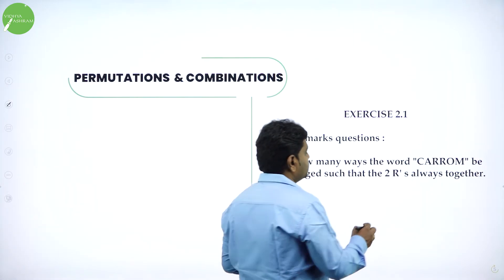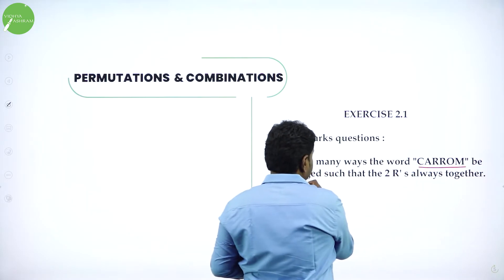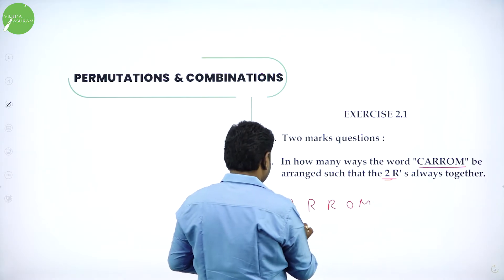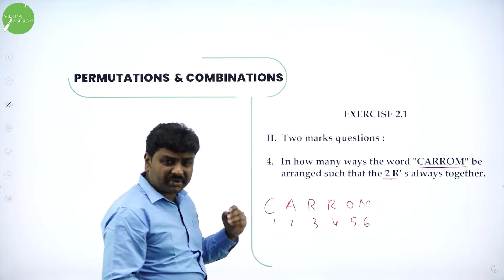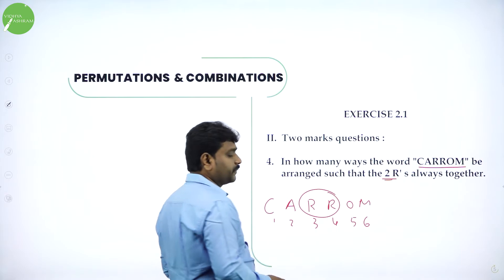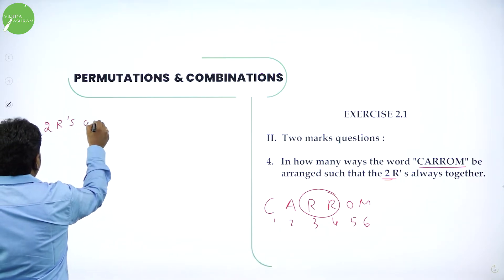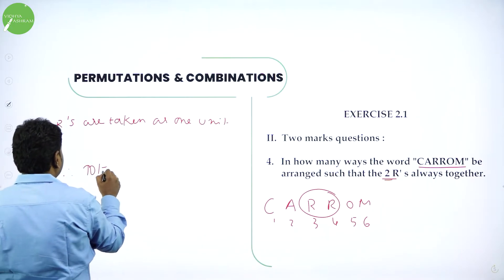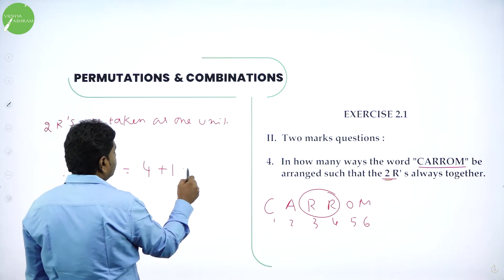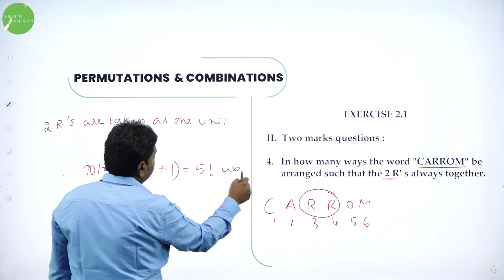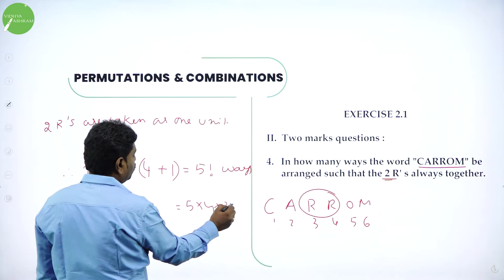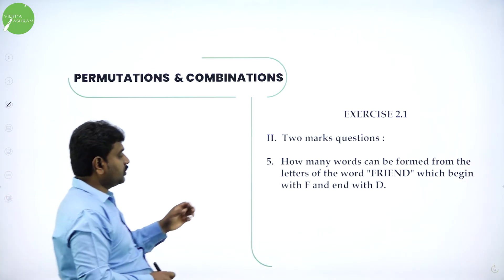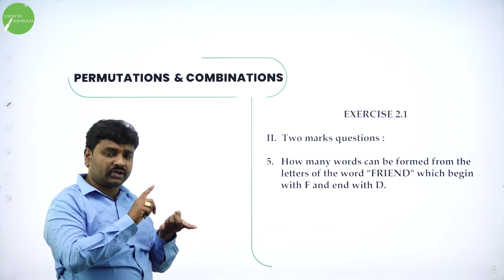In how many ways can the letters of the word KERAM be arranged such that the 2 R's are always together? The word KERAM has 6 letters, which can be arranged in 6 factorial ways. But these 2 R's are taken as 1 unit, so we have 4 plus 1 equals 5 total units — 5 factorial ways. 5 factorial is 5 into 4 into 3 into 2 into 1 equals 120. No need to arrange the two R's separately because both R's are identical.